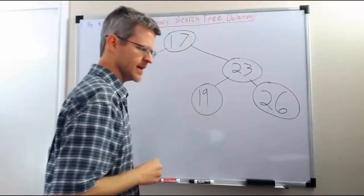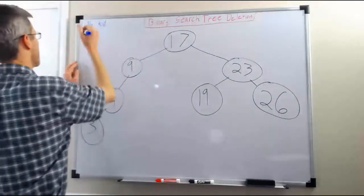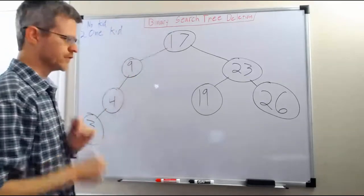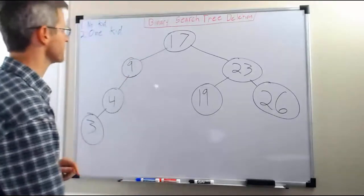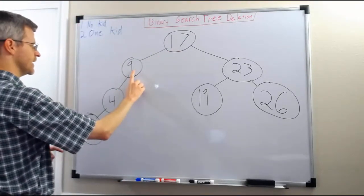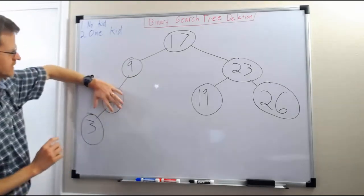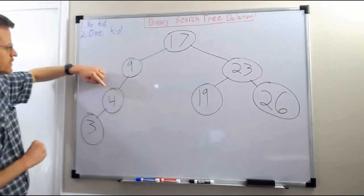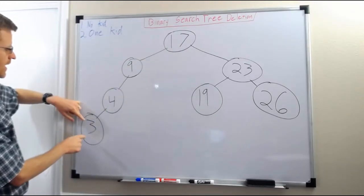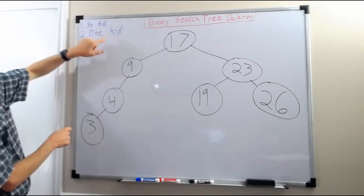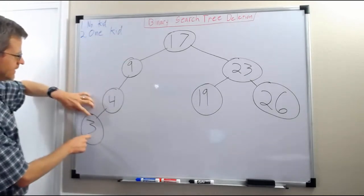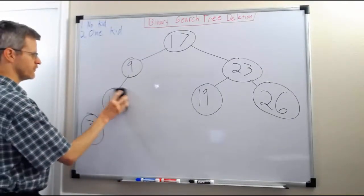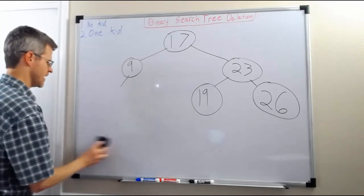The second case is that there is one child of the node that we are deleting. For example, suppose that we are deleting the node 4. So 4 is less than 17, 4 is less than 9, and this is 4. If we were to just delete the 4 and not do anything else, the 3 would go along with it, and if there had been children on the right, they would have gone too. So since 4 only has a single subtree, what we can do is just bring the 3 up into the 4's place — delete the 4 and promote the 3 up to where the 4 was.